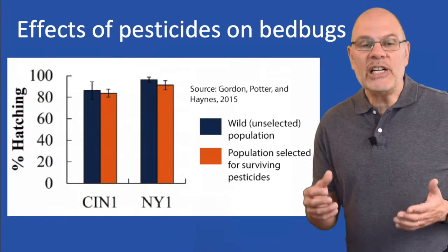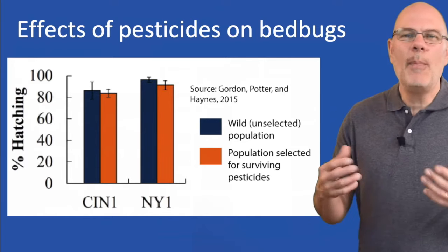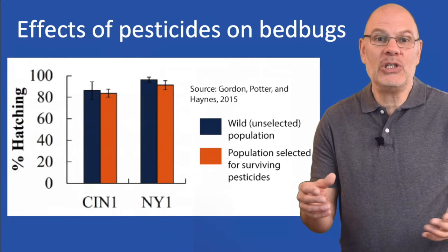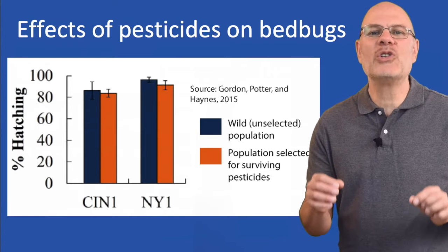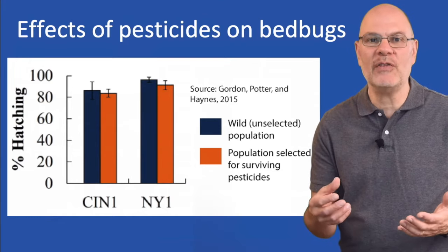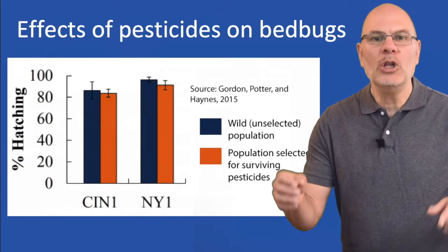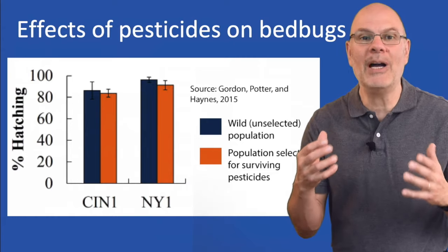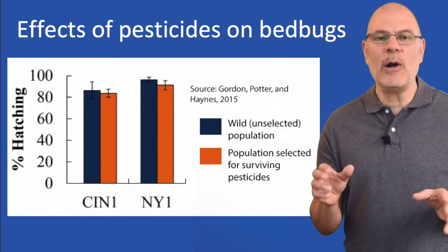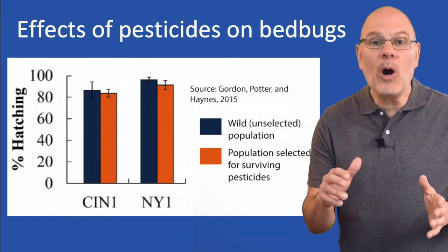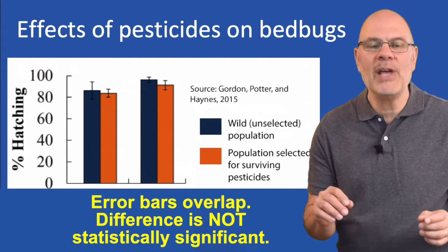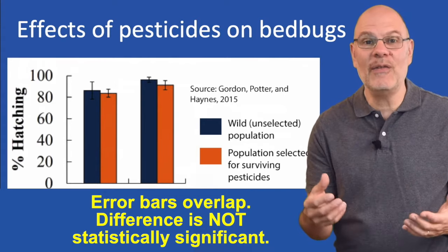Here's another example. A study was done on the effect of pesticides upon various aspects of the life history of different strains of bedbugs. The blue bars represent populations not exposed to the pesticide — the wild type. The orange bars show bedbugs grown for several generations in the presence of the pesticide. One part of the study looked at the effect of these pesticides on the percentage of bedbug eggs able to hatch. The blue bars are higher than the orange bars for both strains, but look at the error bars — their range overlaps. That means there's not a statistically significant difference in egg hatching.